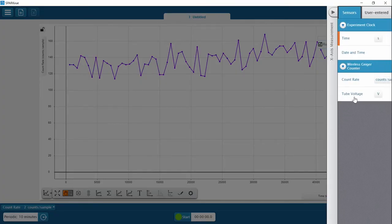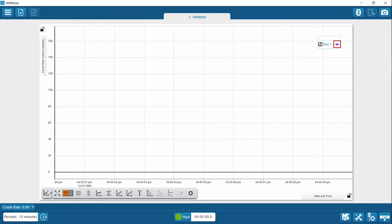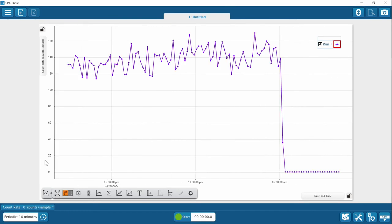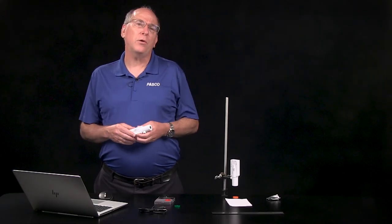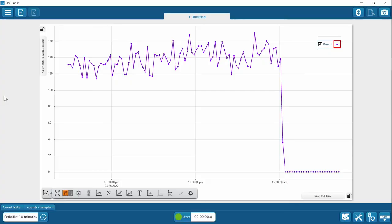Changing the x-axis to date and time makes it easy to tell that the background did not change when the sun went down. Starts at about 3 p.m. here and stayed pretty steady.